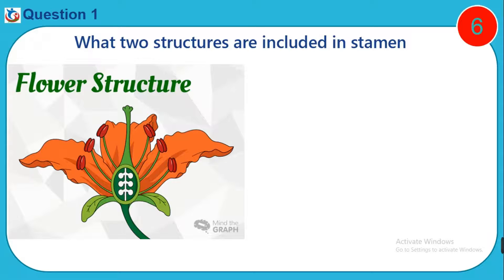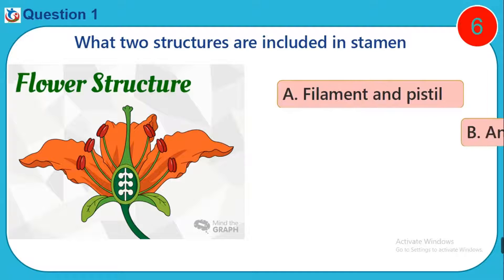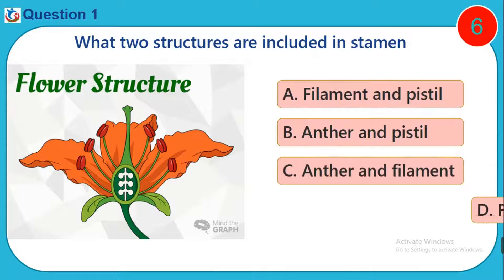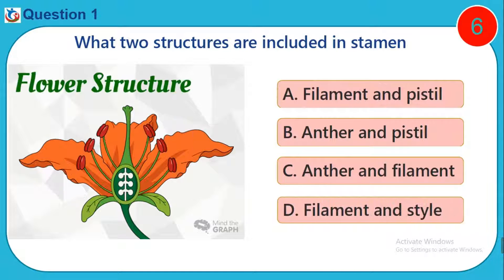Question 1. What two structures are included in the stamen? A. Filament and pistil. B. Anther and pistil. C. Anther and filament. D. Filament and stamen.